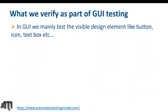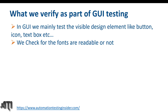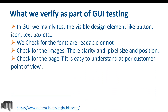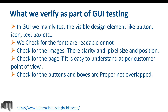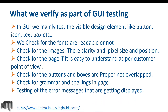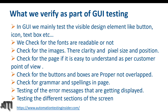In GUI testing, we verify visible design elements like buttons, icons, text boxes, etc. We check whether fonts are readable, images have correct clarity, pixel size, and position. We check if the page is easy to understand from the customer's point of view, that buttons and checkboxes are not overlapped, and that grammar, spelling, and error messages on the web page are correct.